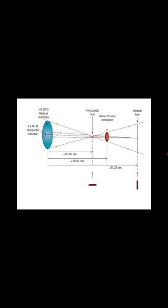Let's begin with an example. In this example, we have a vertical meridian and horizontal meridian which are different. As we know, the Circle of Least Confusion is used in the case of sphero-cylindrical lenses. In this case, we assume that light comes from one meter — 100 centimeter distance. If light comes from parallel, it means plus three here and plus five here.